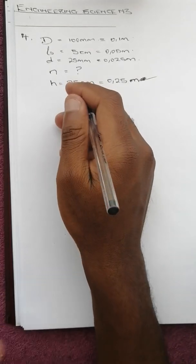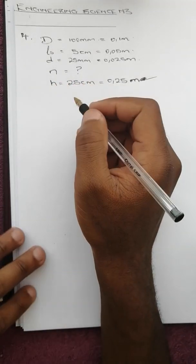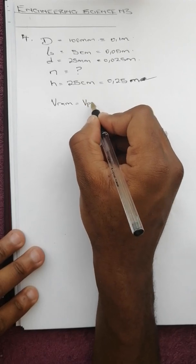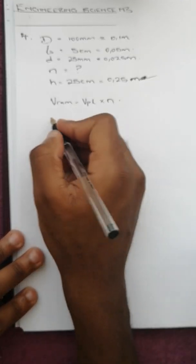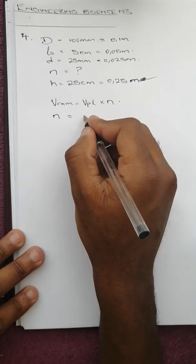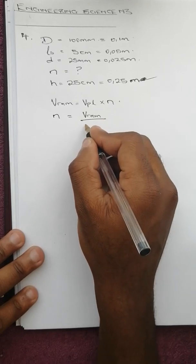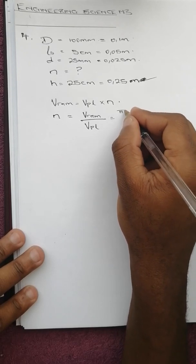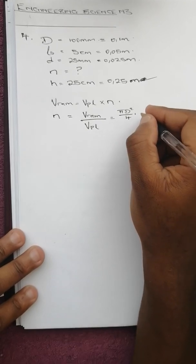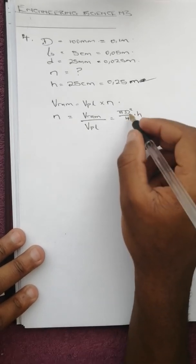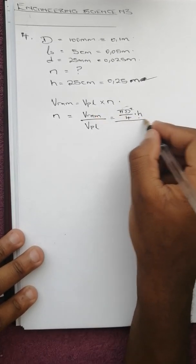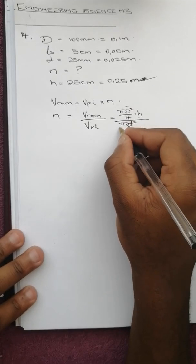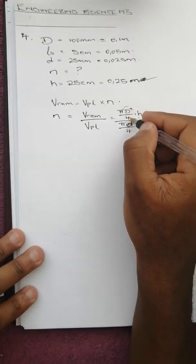If we go to the formula sheet, there's a formula which says v_ram equals v_plunger times number of strokes. We need number of strokes, so we make it subject of the formula: number of strokes equals v_ram over v_plunger. This becomes d squared times h over d squared times ls, and simplifies to d squared h over d squared ls.